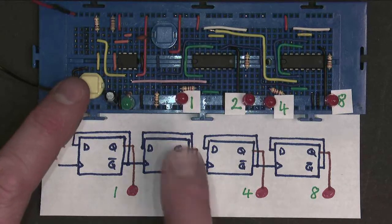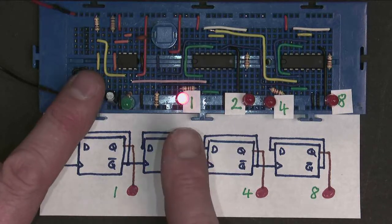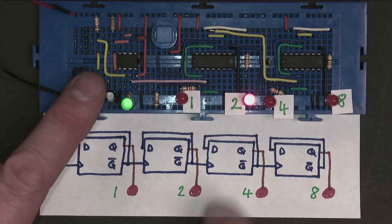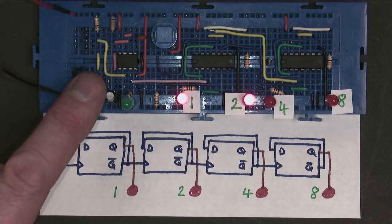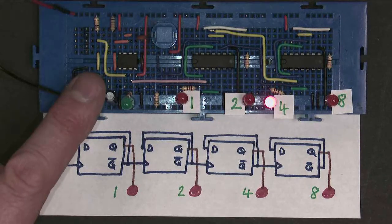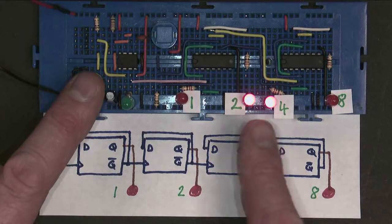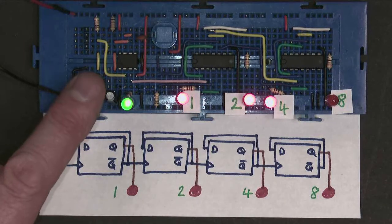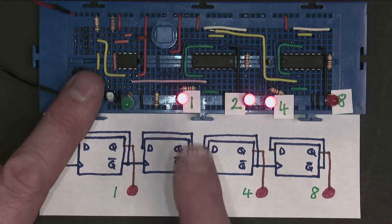So here we go. I so far have zero counts, so I have one, two, two and one is three, four on its own, which is what we didn't have last time, four and one is five, four and two is six, four and two and one is seven, which is the max we can count to with three bits.